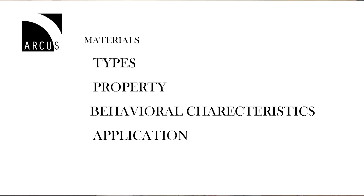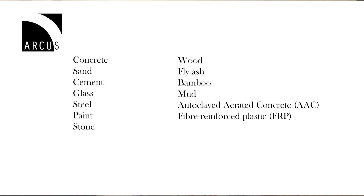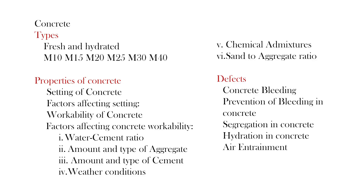In a similar way, the syllabus of building materials can be broken down into types, properties, behavioral characteristics, and applications of different materials like concrete, coarse aggregate, sand, cement, and glazing, etc. Again, as an example, I am explaining concrete. Concrete is found in fresh and hardened types.